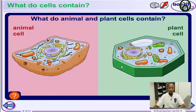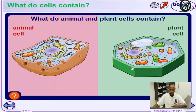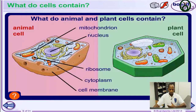Now let's take a look at the different kinds of cells, specifically the major cells — categorizing them into plant and animal cells. If you take a look at an animal cell, you discover it has the mitochondria, the nucleus, the ribosome, the cytoplasm, and the cell membrane.